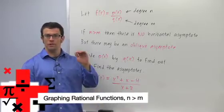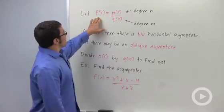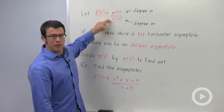I want to talk about rational functions where the degree of the numerator is bigger than the degree of the denominator. So remember, a rational function is a ratio of two polynomials.